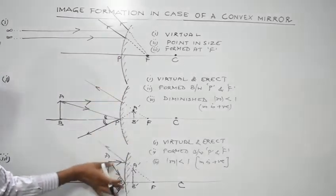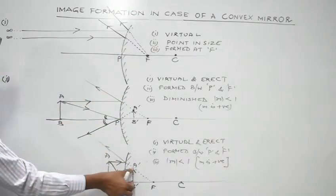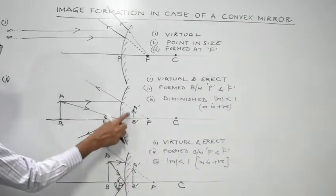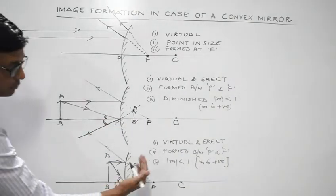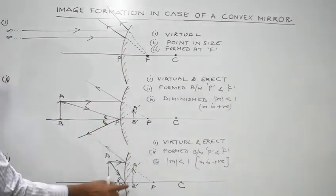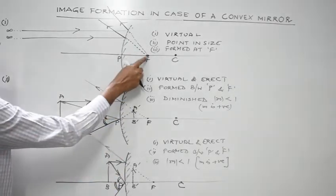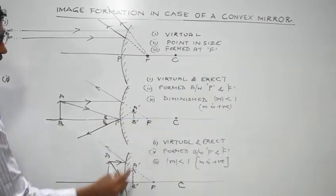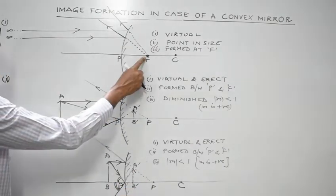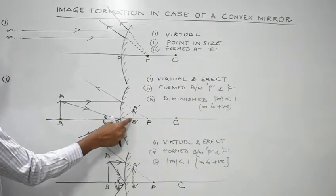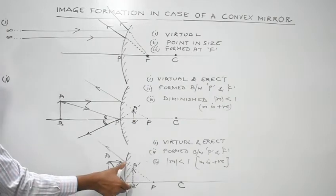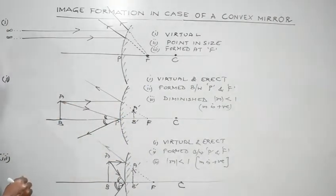Now observe the three diagrams carefully. In case 3, the size of the image is much greater than in case 2, and the image position has moved closer toward the pole. Comparing all three: in case 1 the image is at the focus; in case 2 it is between P and F; in case 3 it is again between P and F but slightly closer to the pole. The size increases from case 1 to case 3.